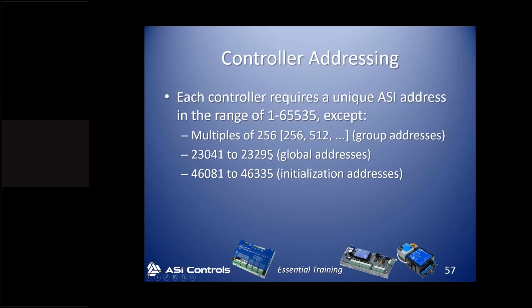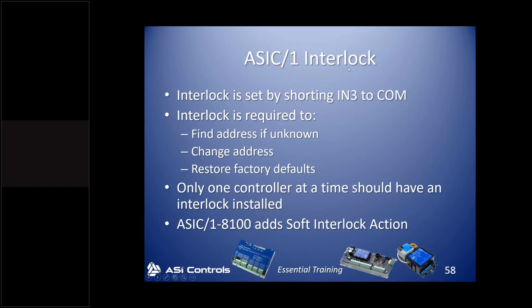There are addresses in the 23,000 range reserved for what we call global addresses — to make a change affecting all controllers of a certain type. There are also addresses in the 46,000 range reserved as initialization addresses, used for certain housekeeping tasks mainly in ASIC/1 controllers. The primary initialization address is used with what we call an interlock, which is set by shorting Input 3 to common — either at the controller or through our MicroSync device, which is a USB-powered temporary communication interface.